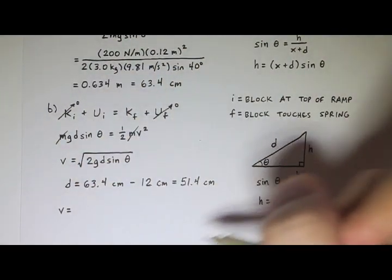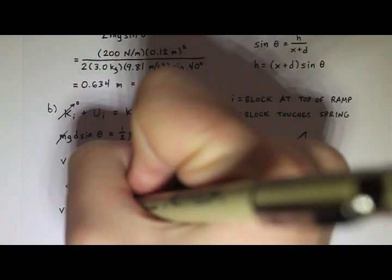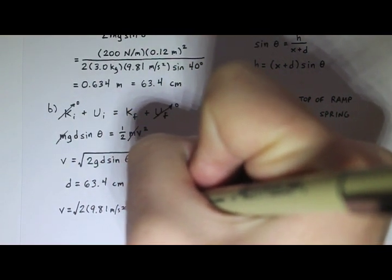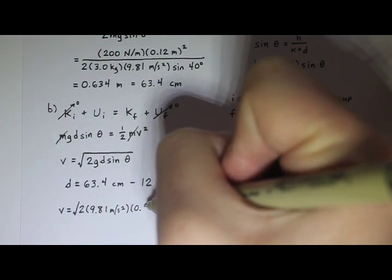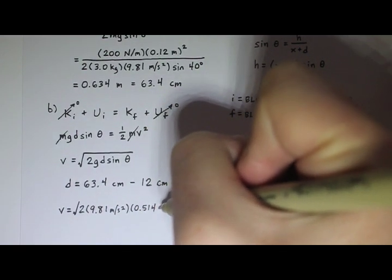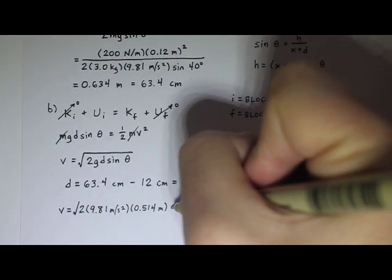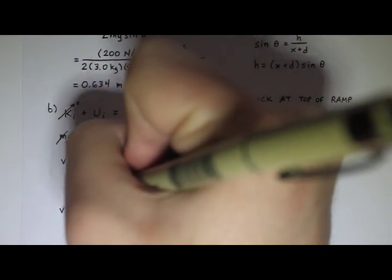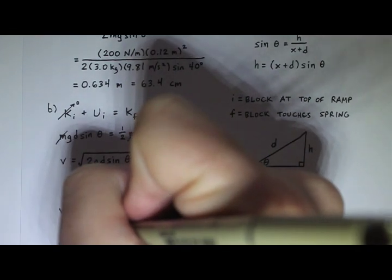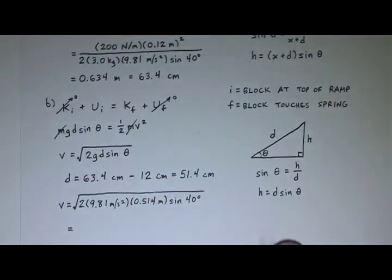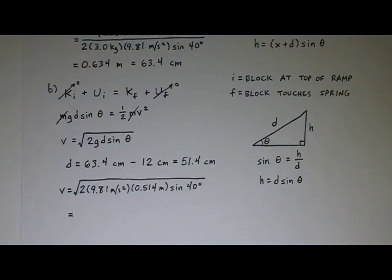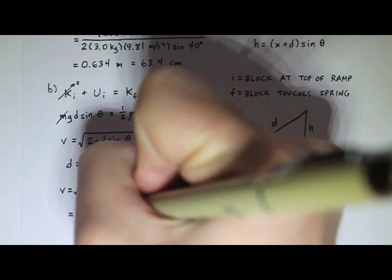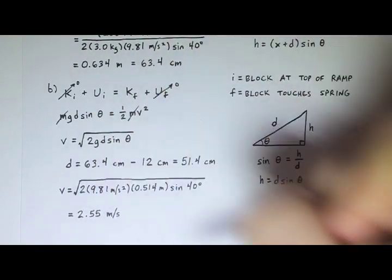So v is square root of 2 times g, which is 9.81 meters per second squared, times d, which I just found. That's 0.514 meters. And then the sine of 40 degrees. And then the square root of all that. And so when you calculate this, type it into a calculator, you'll end up getting 2.55 meters per second.